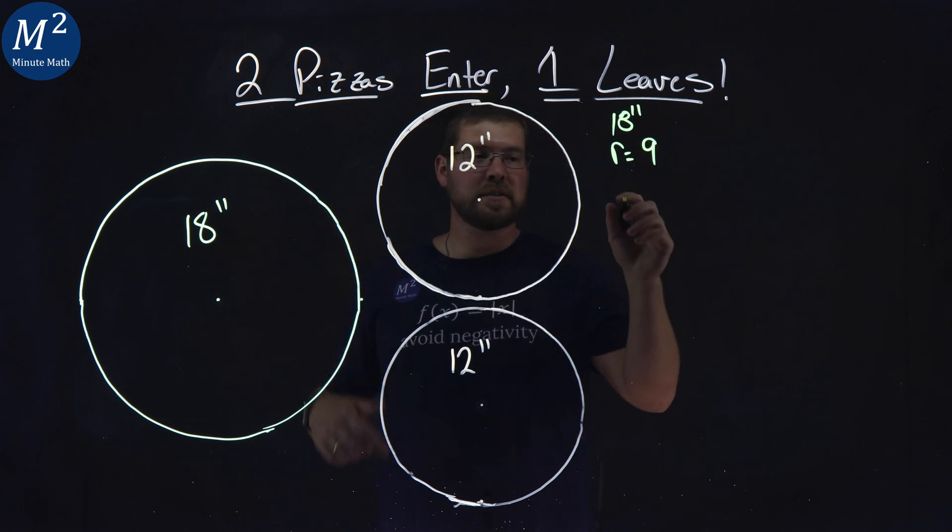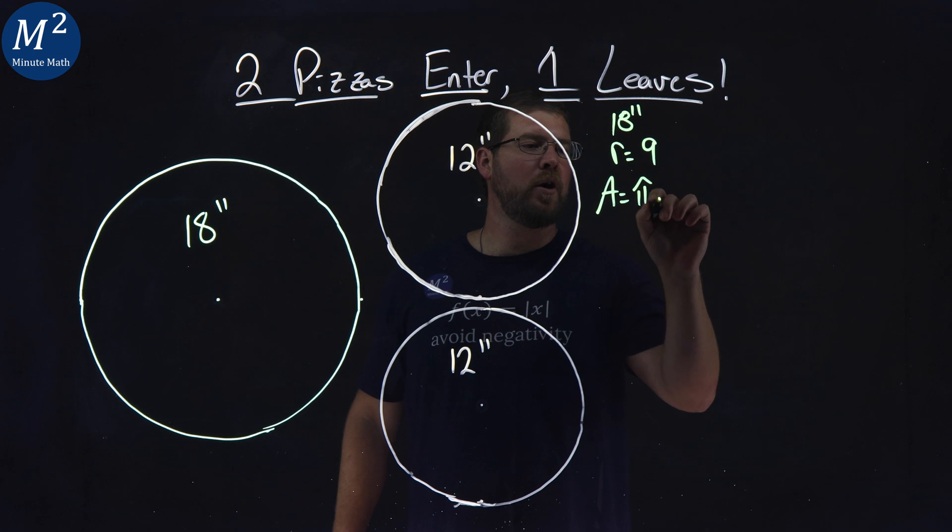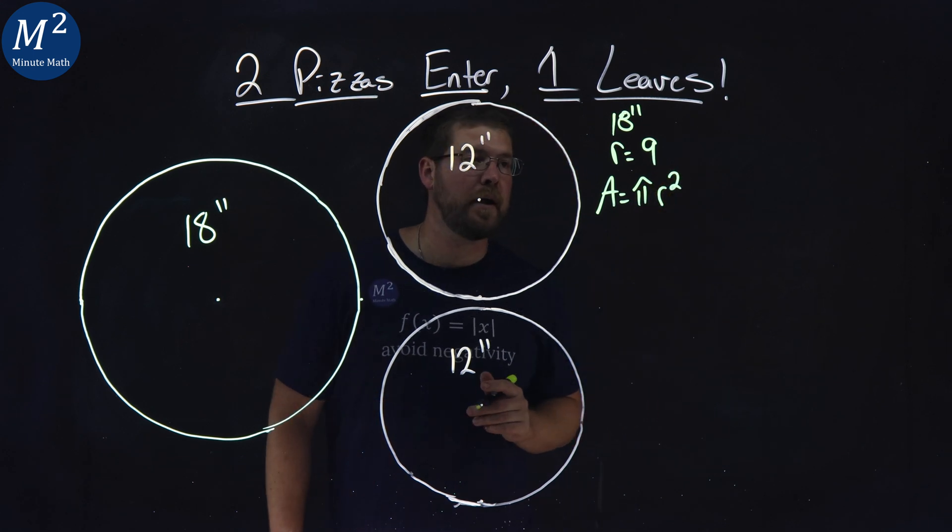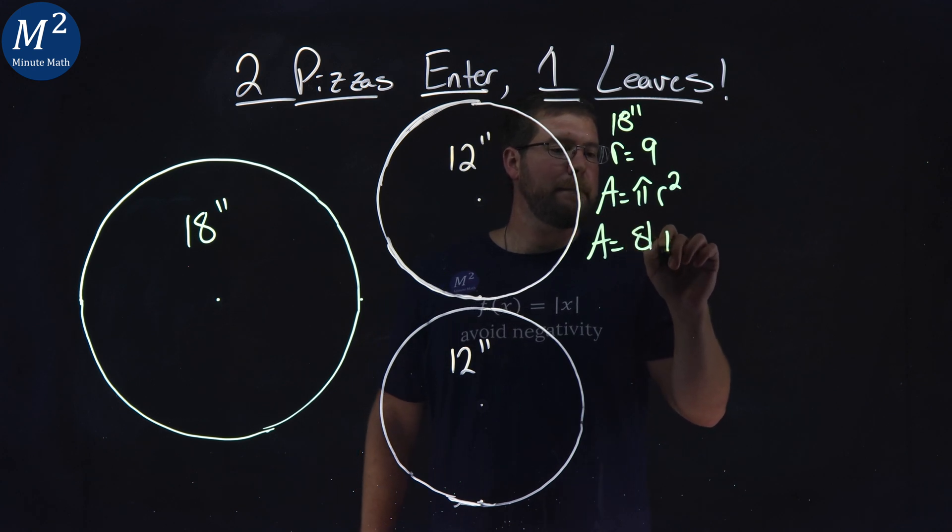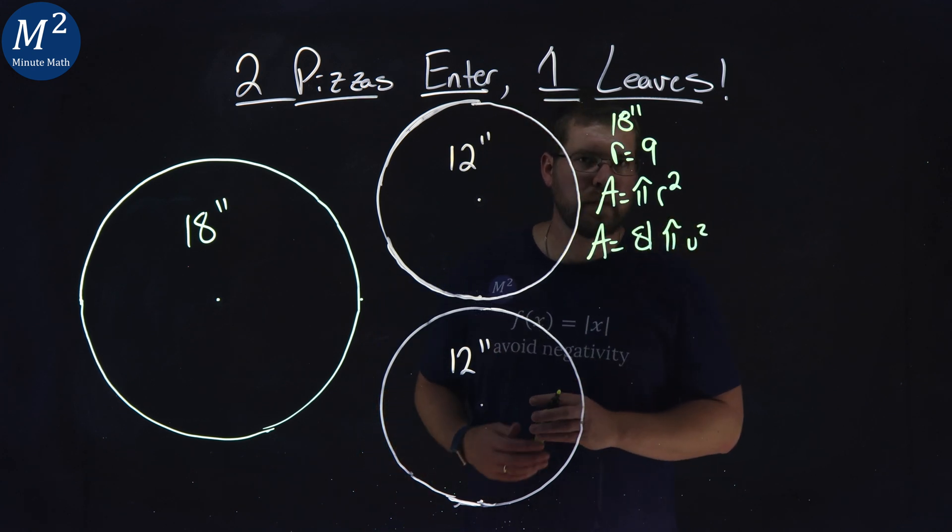The formula for the area of a circle is area equals pi r squared. 9 squared is 81, so our area here is 81 pi units squared.